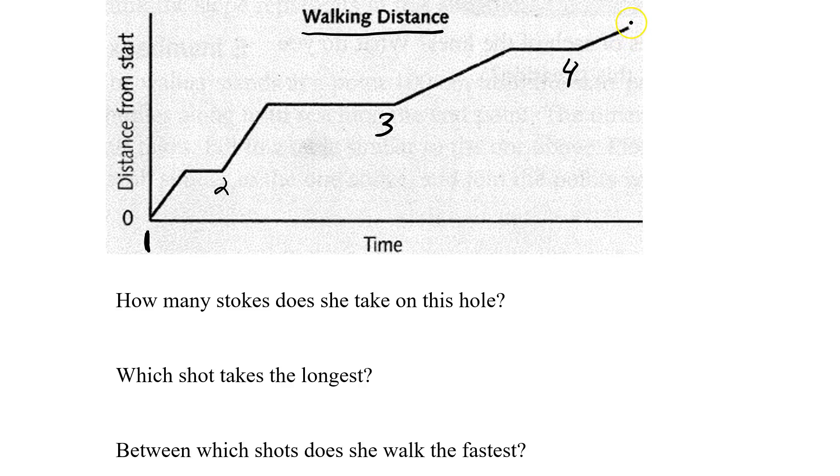And then she walks to her ball and the shot is done, or the hole is done. So she made one, two, three, four. So four shots.